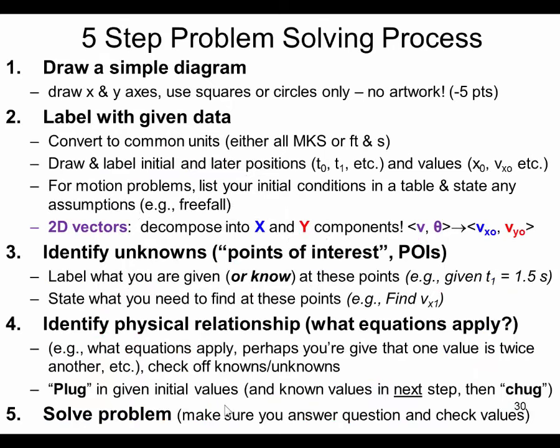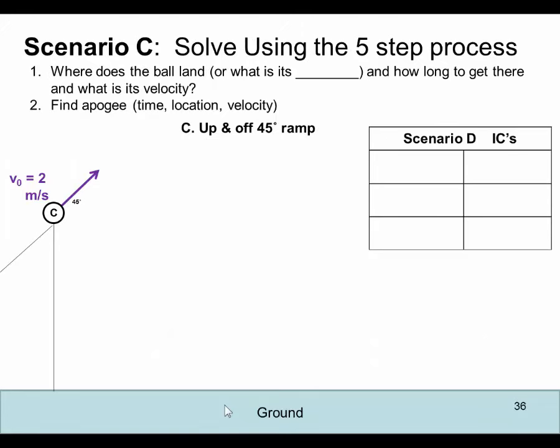So our five-step process is identical to before, and you'll notice the one line that comes in here, when we're putting together our data, if we have a two-dimensional vector in there, the one that's not moving left and right or up and down at some combination, well, we'll just break it down into its x and y pieces. So let's apply the five-step process to Scenario C.